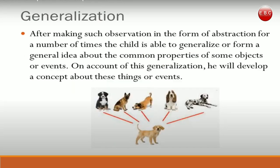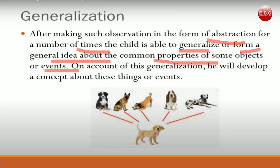After abstraction comes generalization. After making such observations in the form of abstraction for a number of times, the child is able to generalize or form a general idea about the common properties of some objects or events. On account of this generalization, they will develop a concept about these things or events.